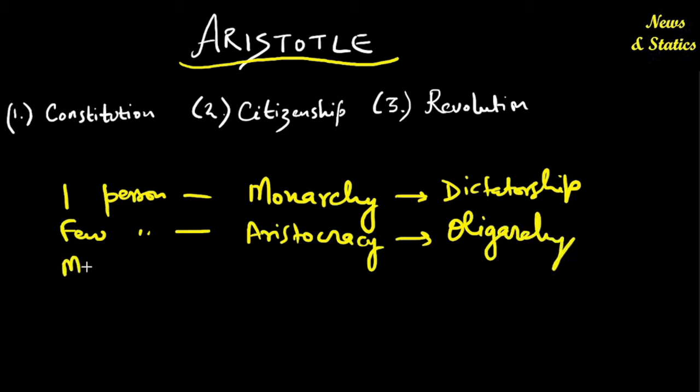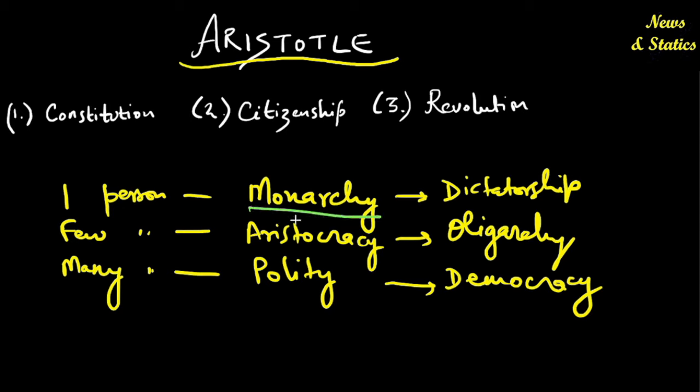And if you have the rule of many people or most of the people, that is polity and that might get degraded to democracy. What do I mean by degraded? Monarchy is the rule of an ideal king, what Plato called as a philosopher king. But if he wields unfettered power and starts doing the wrong things, won't he become a dictator? Aristocracy is the rule of a few intelligent people. But when they form a group within themselves and keep the rest of the society under them in an exploitative manner, won't it become an oligarchy?